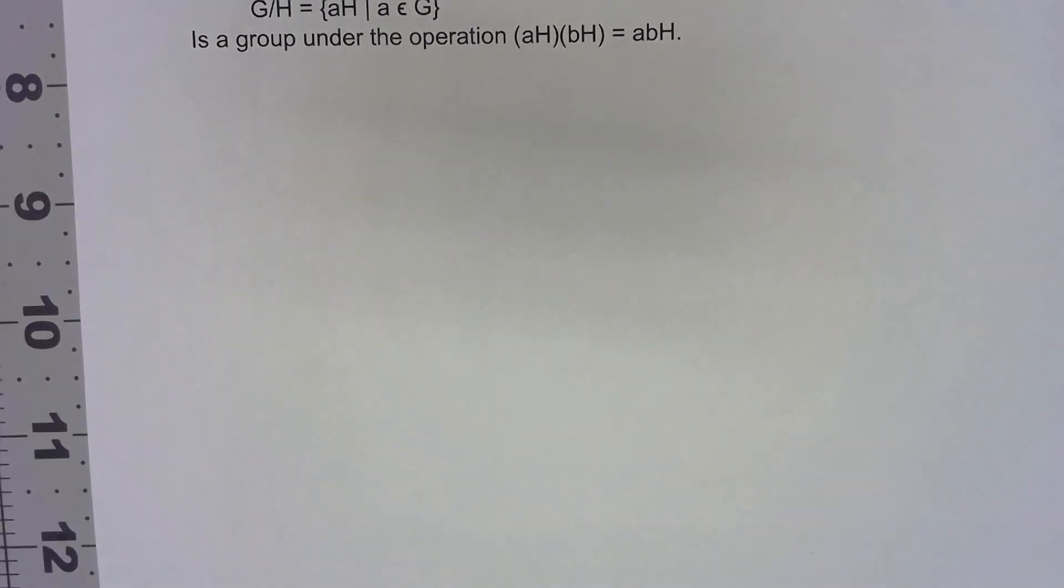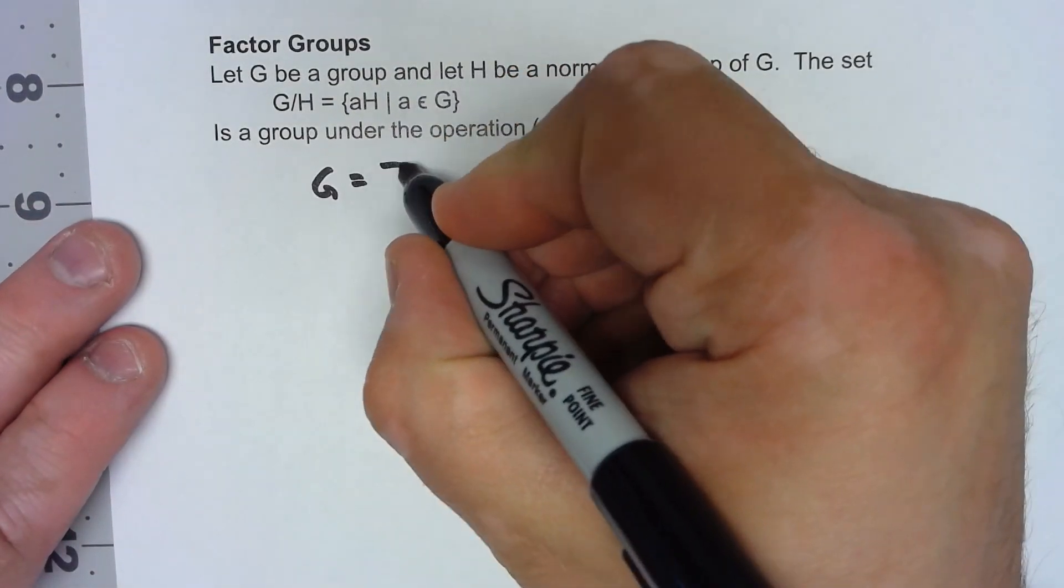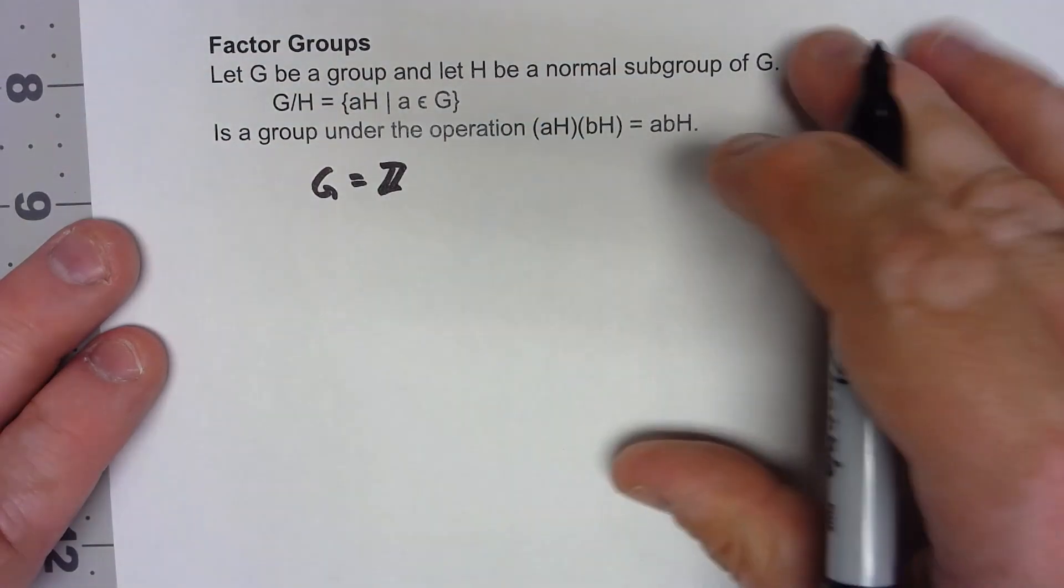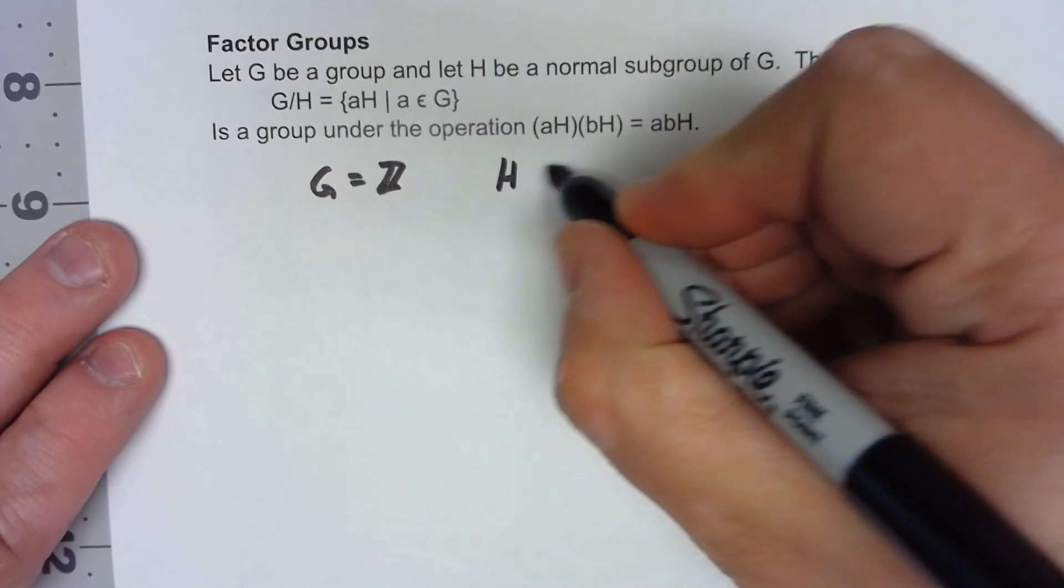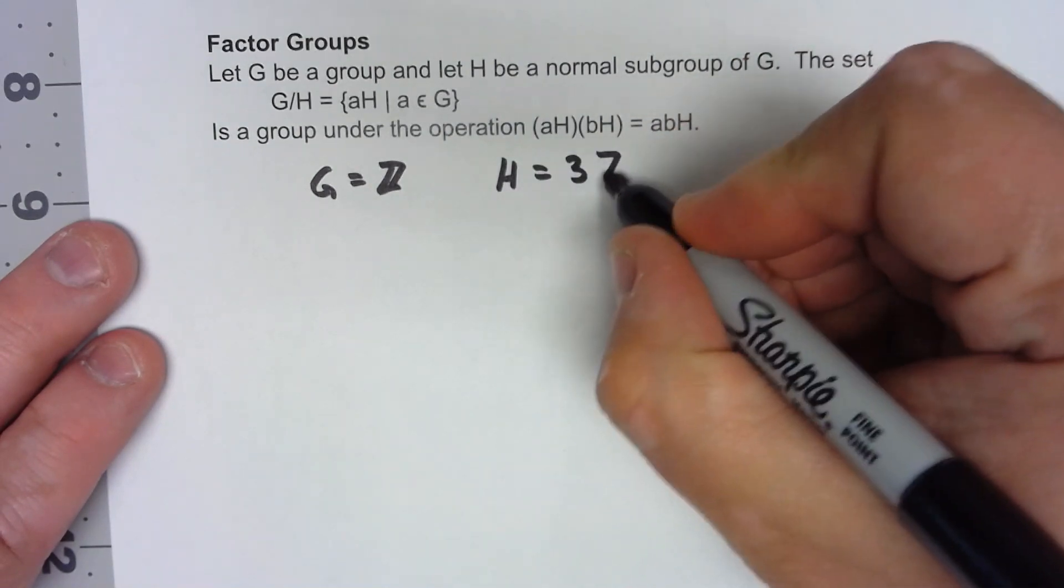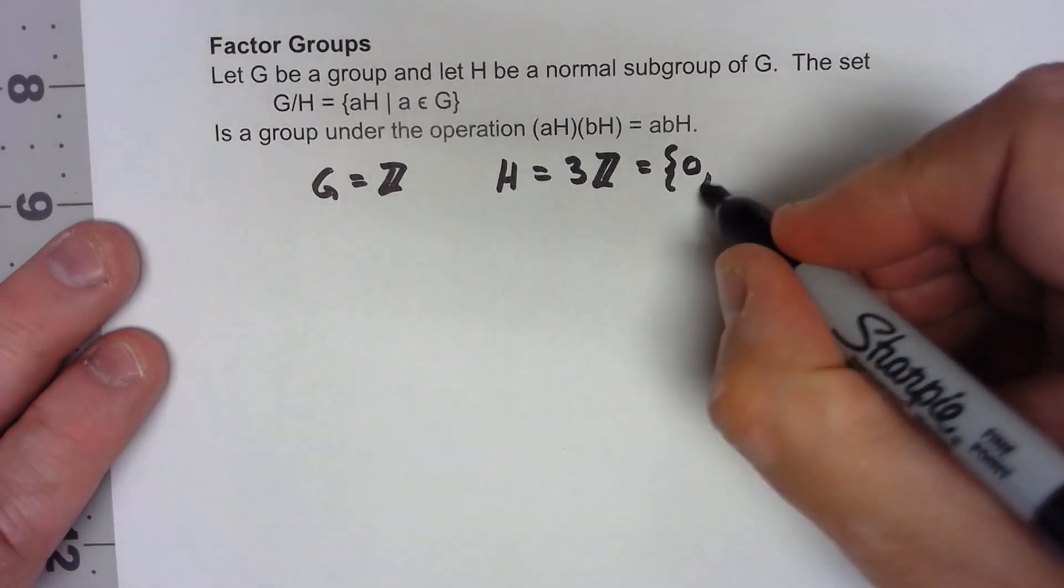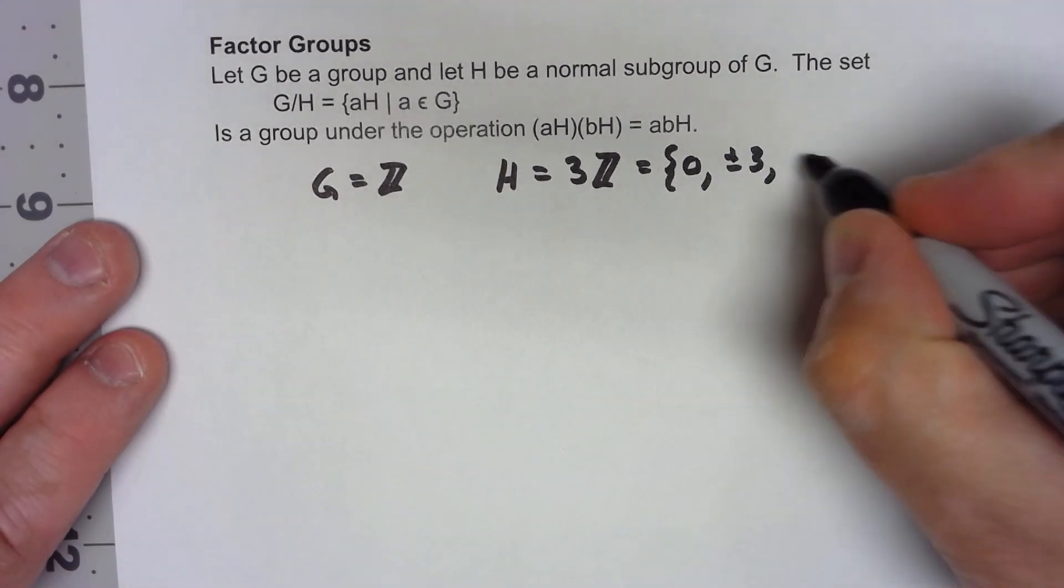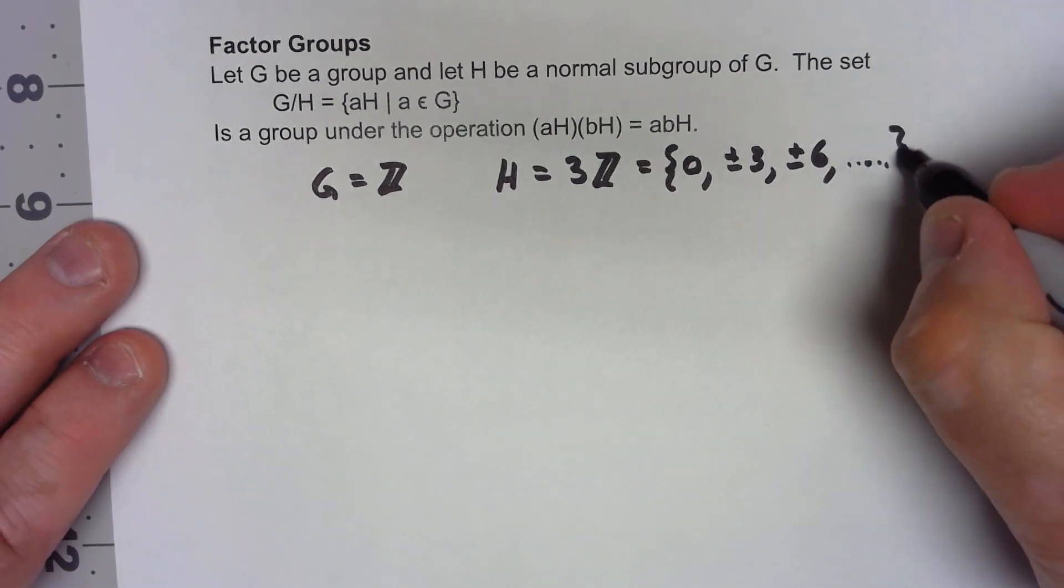Let's start with an easy example. Let's say that my group G is the integers under addition, and then my subgroup H is 3Z, so that's basically all the multiples of three. We have 0, plus or minus 3, plus or minus 6, and so on like that.